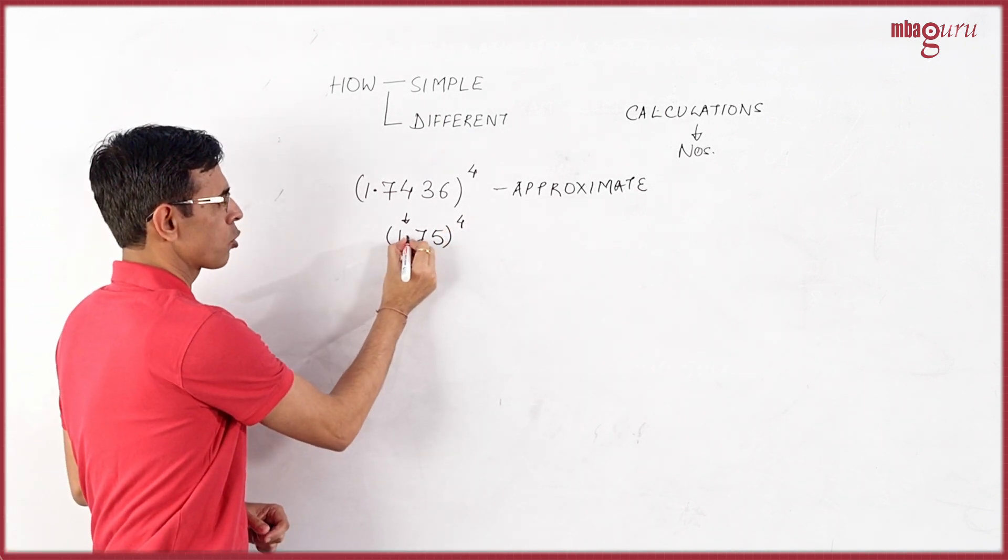Now looking at this expression, what are the ways we could look at? First of all, let's simplify it. This is nothing but something very close to 1.75. So if we can get 1.75 raised to the power 4, we pretty much have this expression if you need an approximate value.